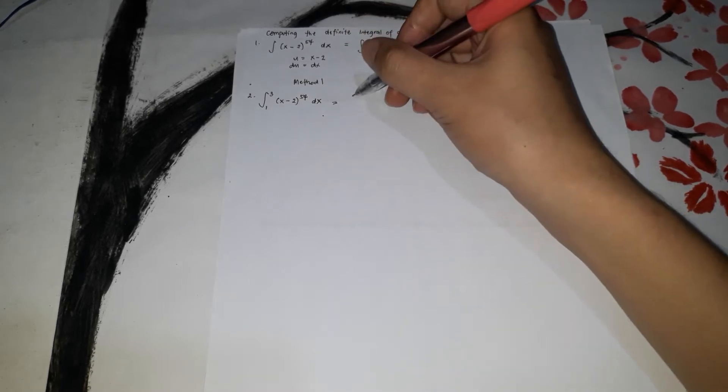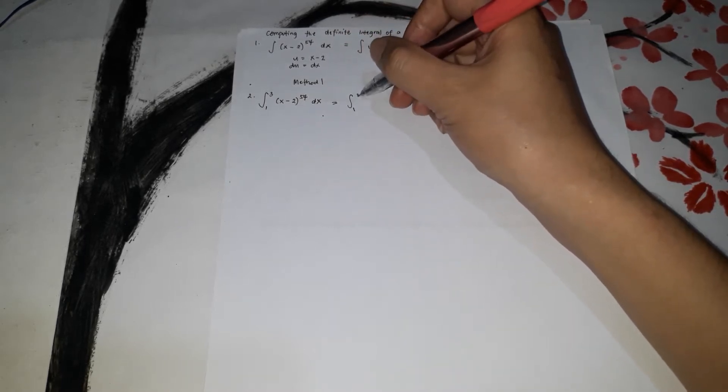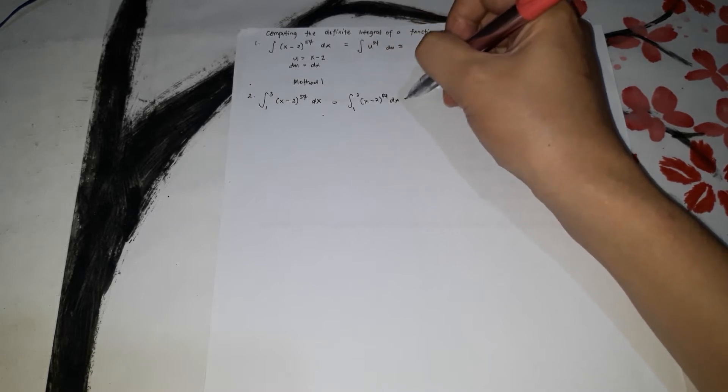First, find the antiderivative of the integral from 1 to 3 of (x minus 2)^54 dx. Treating this without the limits first, you get the antiderivative: (x minus 2)^55 over 55 plus c. Then erase the plus c and write the limits 1 and 3 on the vertical bar.